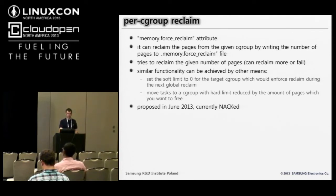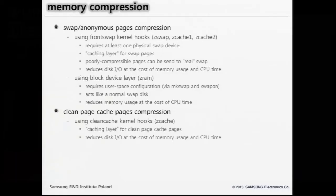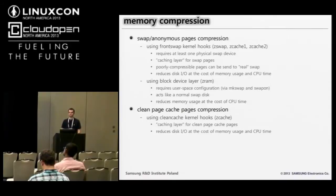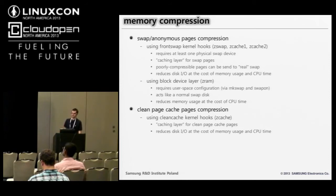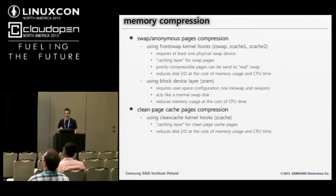This feature was quite useful for us in our memory handler, but I will talk about it later. On to memory compression — I will go over this briefly because yesterday Seth Jennings had a presentation about transparent memory compression and already covered the subject. We can have swap anonymous pages compression done in two ways: one using front swap kernel hooks and the other using the block device layer. If using front swap functionality, we must have a physical swap device, which is a real problem on most mobile devices. There are some patches which change this behavior but they are not merged yet.